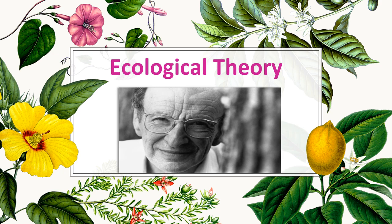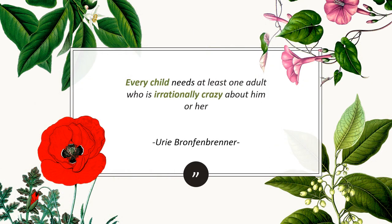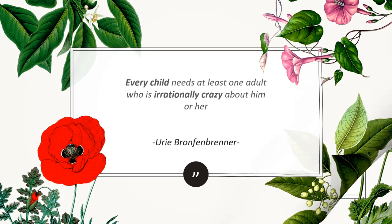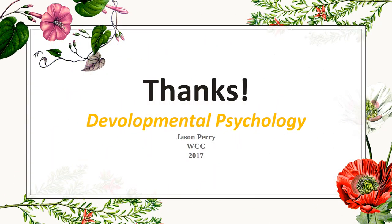The Ecological Theory — as Urie Bronfenbrenner said, 'Every child needs at least one adult who is irrationally crazy about him or her.' Bronfenbrenner's Ecological Theory had five systems that impacted how a child developed, based on the environment and surroundings: the microsystem, the mesosystem, the exosystem, the macrosystem, and the chronosystem. All of these systems had an impact, and the child's surroundings were the central focus. Thank you, everyone.